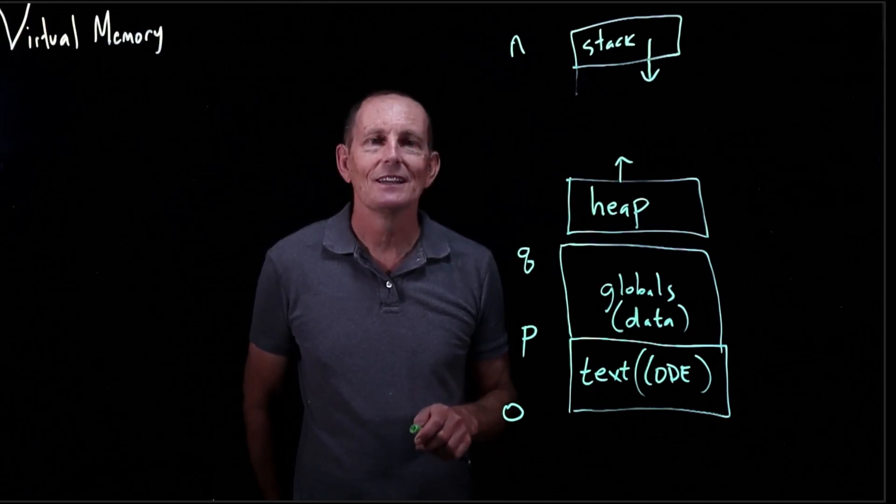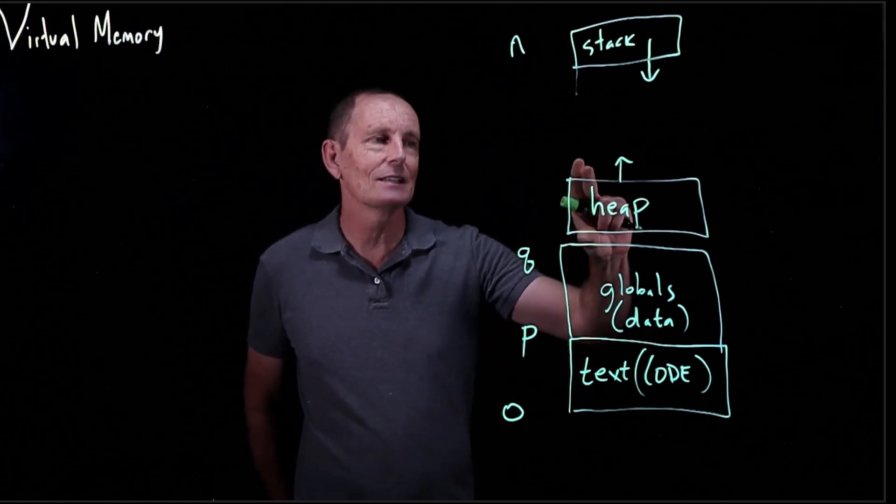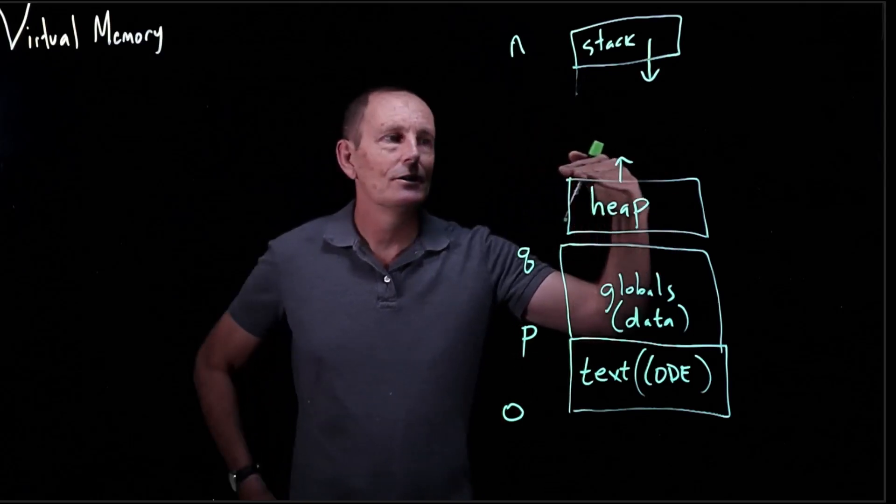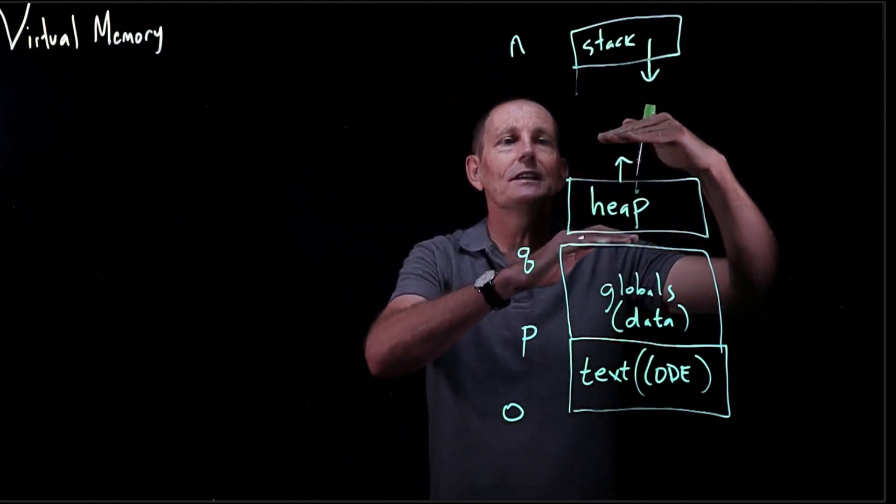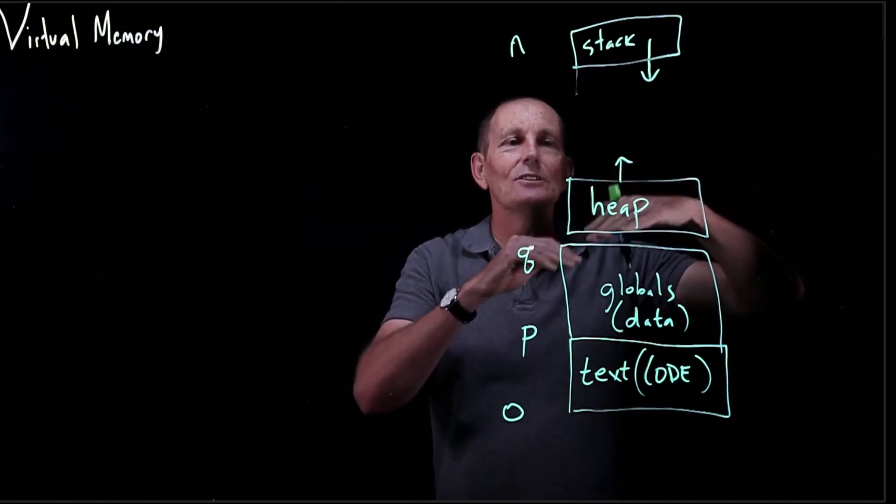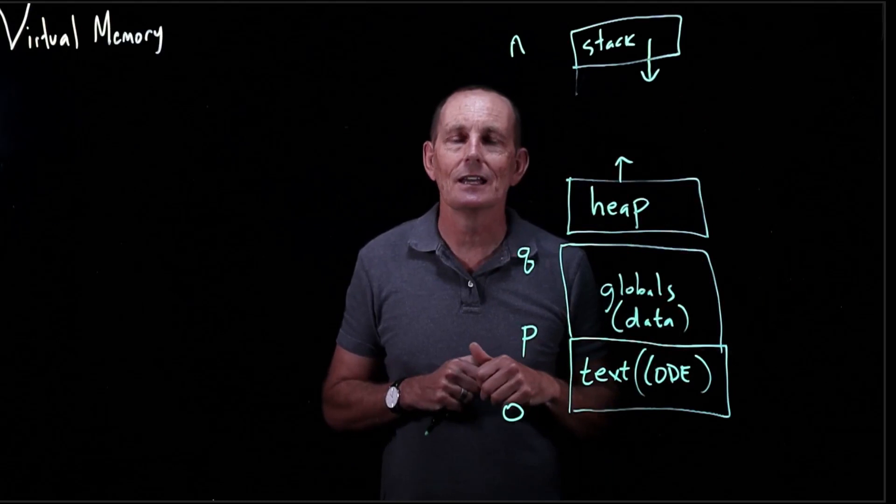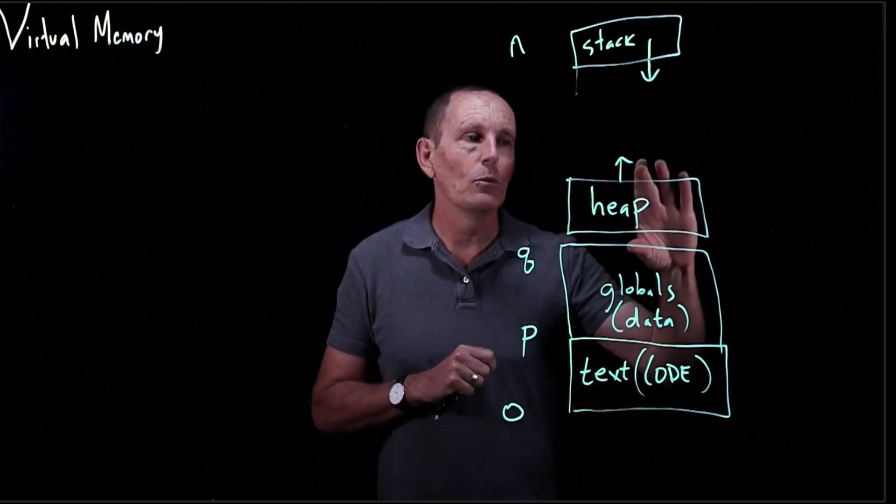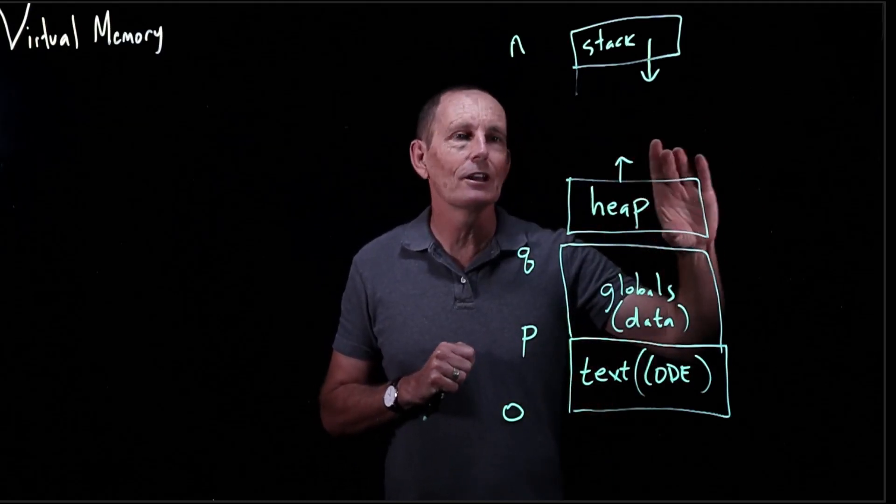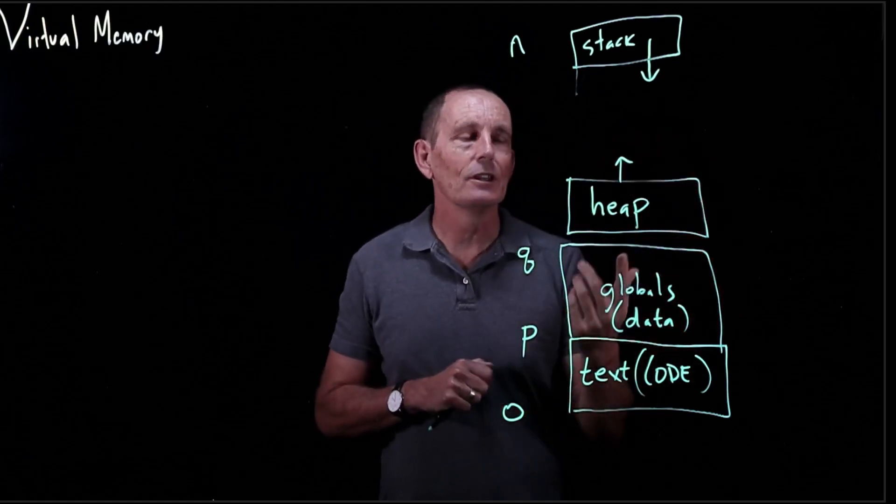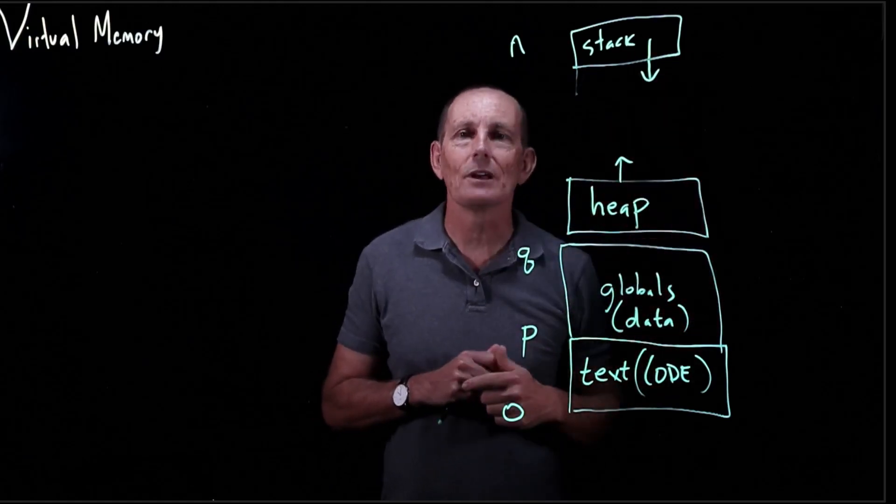Instead, what happens is the kernel has basically this heap, and you could just ask for the heap to get bigger. So you can move this frontier of the heap, and it's up to you to sub-allocate within this heap. So malloc is actually a user library that will go ahead and, if necessary, call to make this heap bigger. So the heap we have growing up and the stack we have growing down.